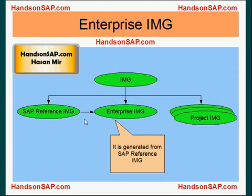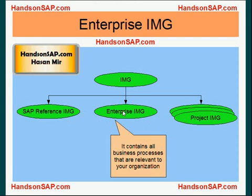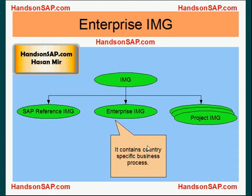You don't need all the modules and all the business processes for your company. Your scope of implementing SAP is limited. So what you do is you generate Enterprise IMG from SAP Reference IMG. It's generated from SAP Reference IMG, and Enterprise IMG contains all business processes that are relevant to your organization, including any country-specific business processes that are required as well.